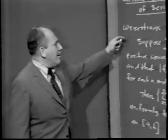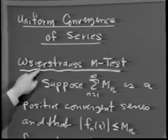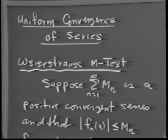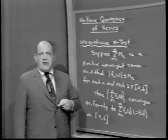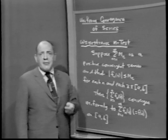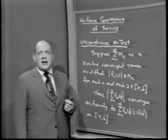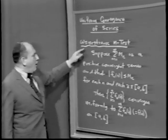Now that we know what the concept means, is there an easy way to tell when we have the property? This being our last lecture, I should give you some big names to remember. And so I come to our first concept today, which is named the Weierstrass M-test. The Weierstrass M-test is a very convenient method for determining whether a given series converges uniformly or not.